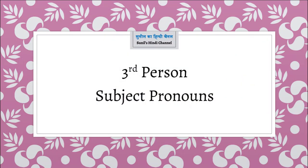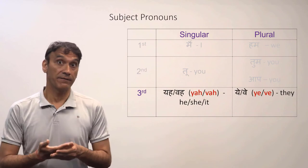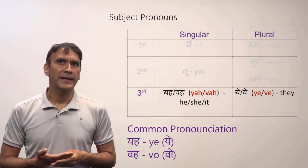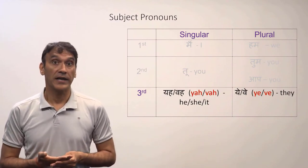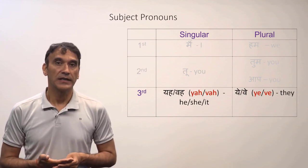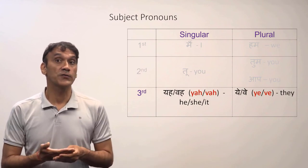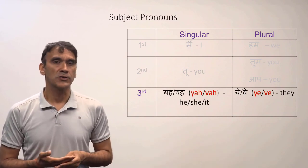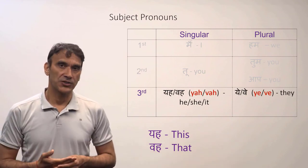The third person singular subject pronouns in Hindi are 'yah' and 'vah,' commonly pronounced as 'yay' and 'wo.' Hindi does not make any gender distinction, so 'yay' can mean he, she, or it, and 'wo' can also mean he, she, or it. The distinction between 'yay' and 'wo' is based on proximity to the speaker: 'yay' is used for someone physically close to the speaker, and 'wo' is used for someone far away.